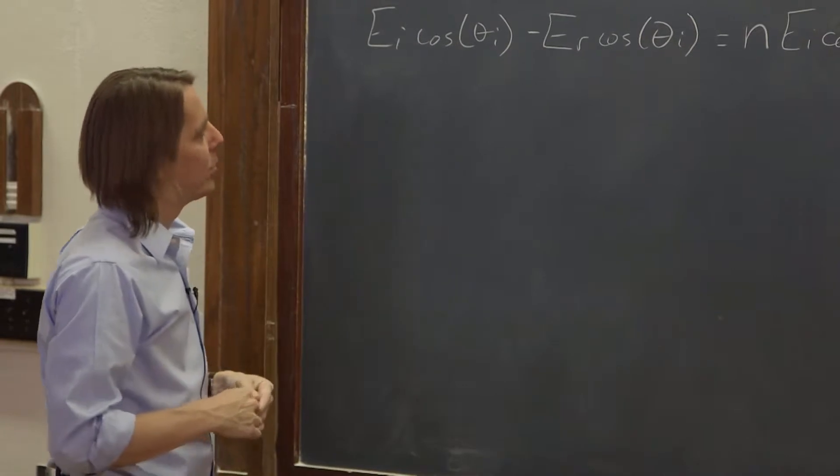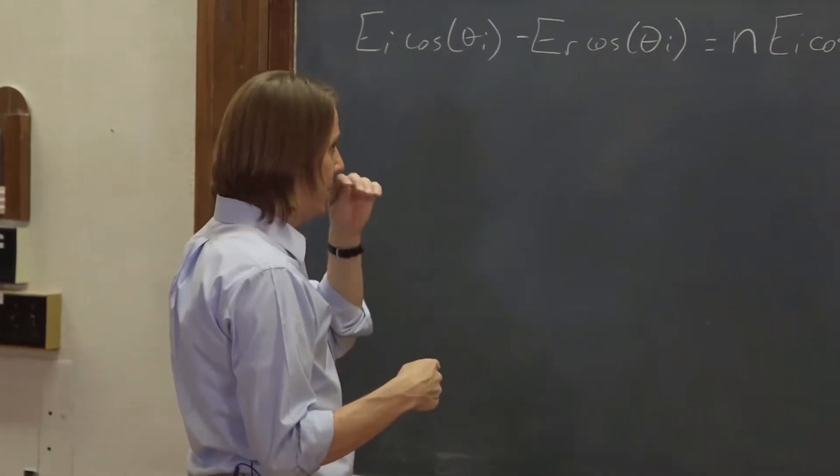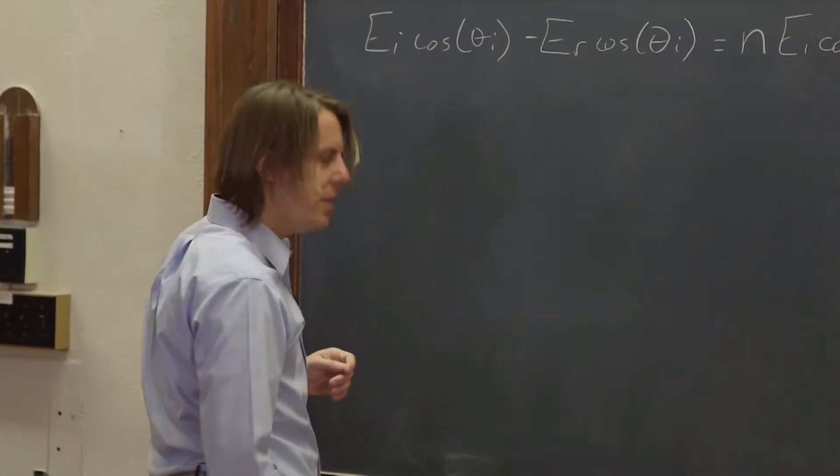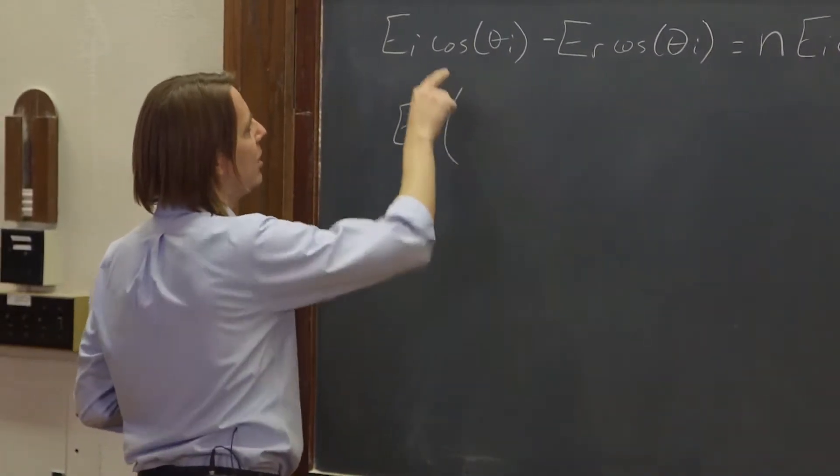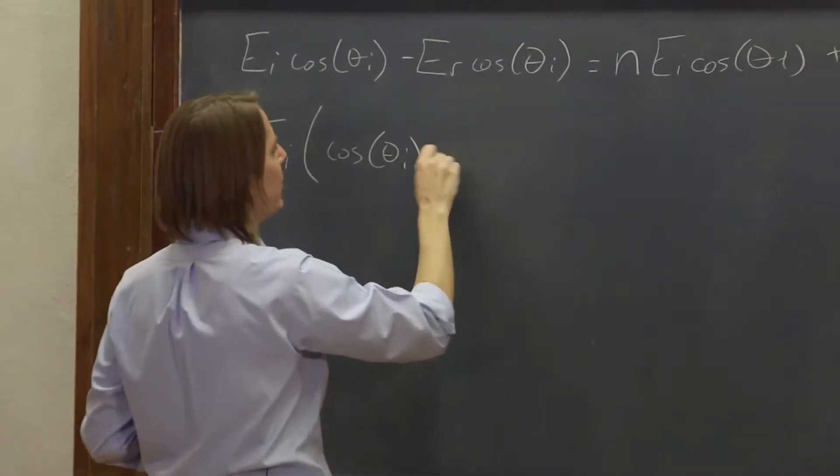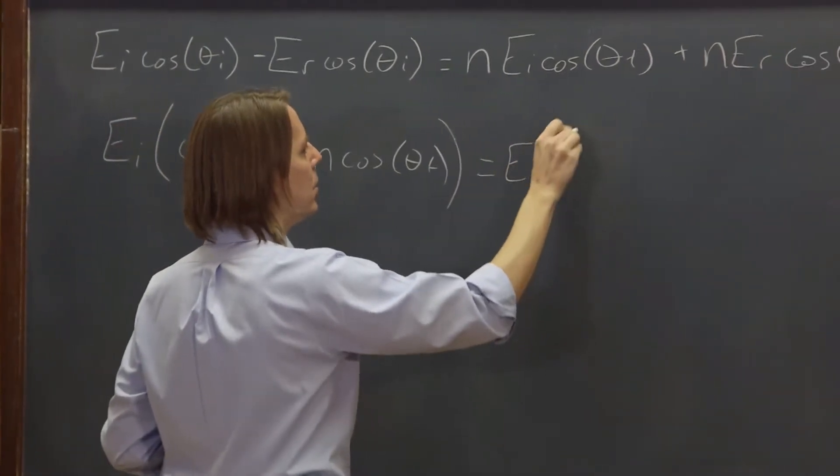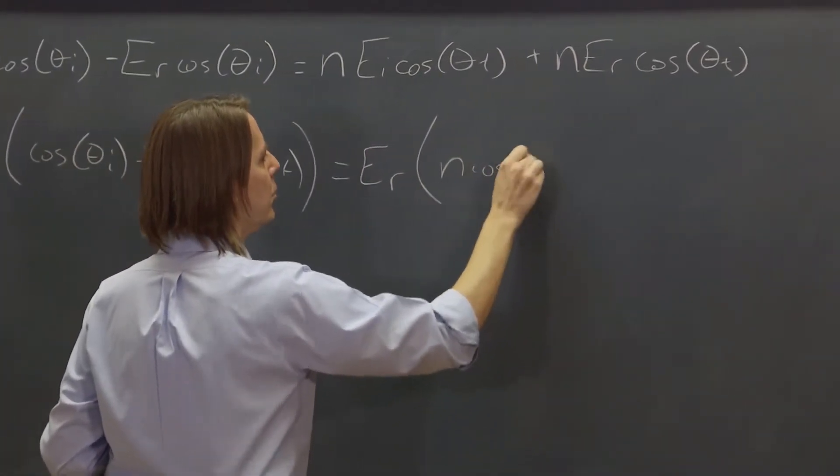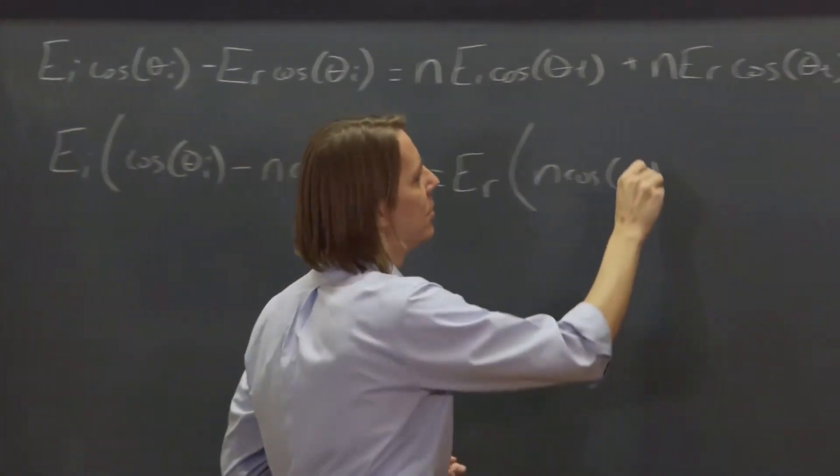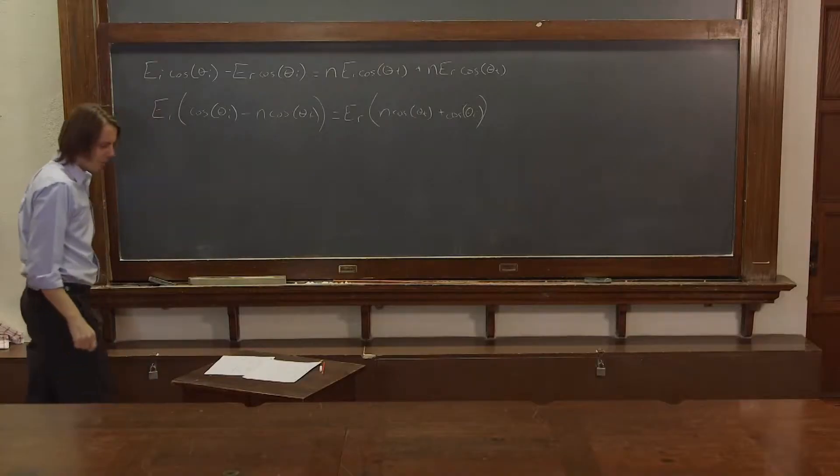And now we're interested, we're going to start with the reflection coefficient. We want to get ER over EI. So we switch these around and pull out the ERs and the EIs. EI times we have cosine θI here and then minus n times cosine θT here. And then on the right side we have ER times n cosine θT there plus cosine θI there.